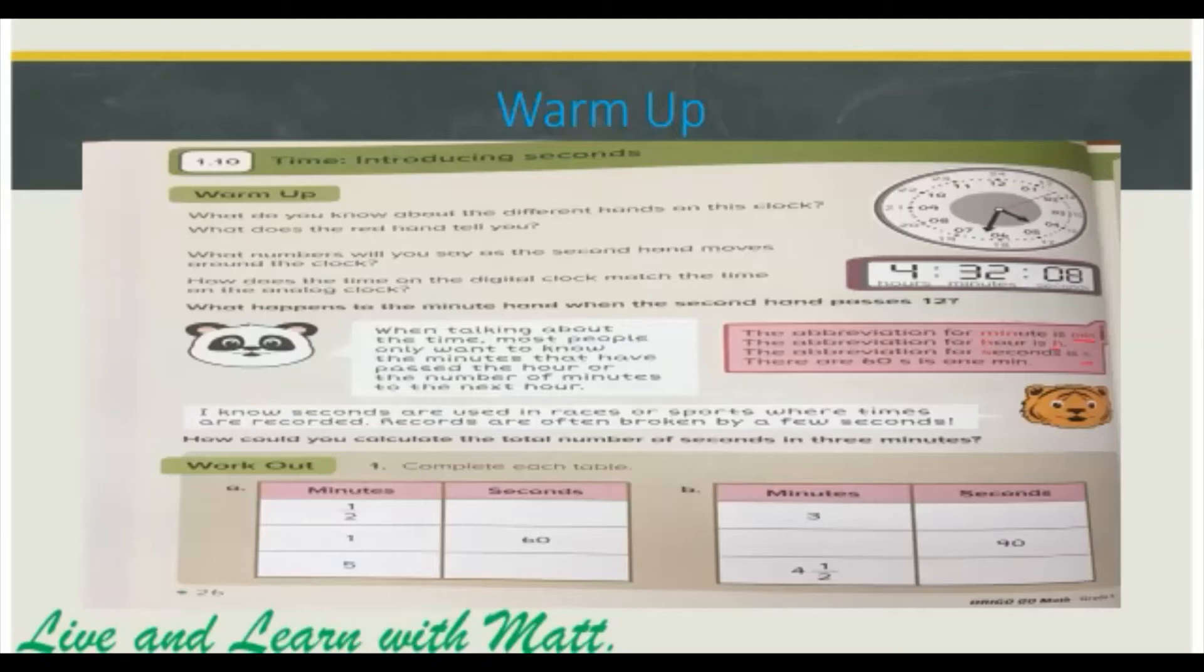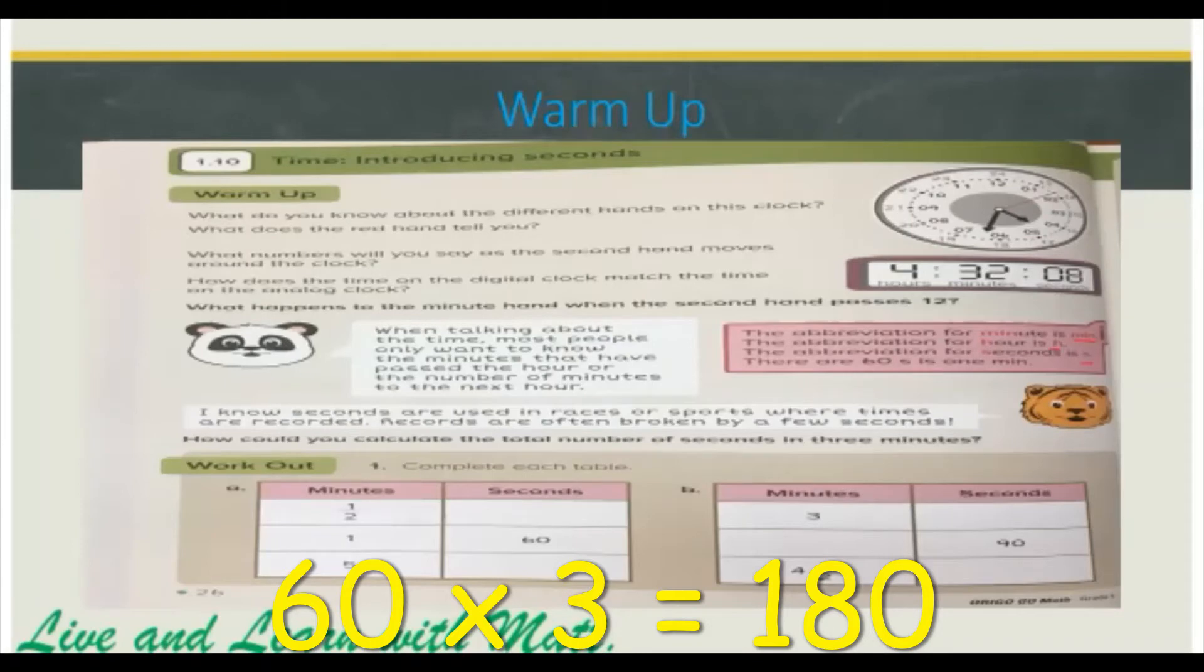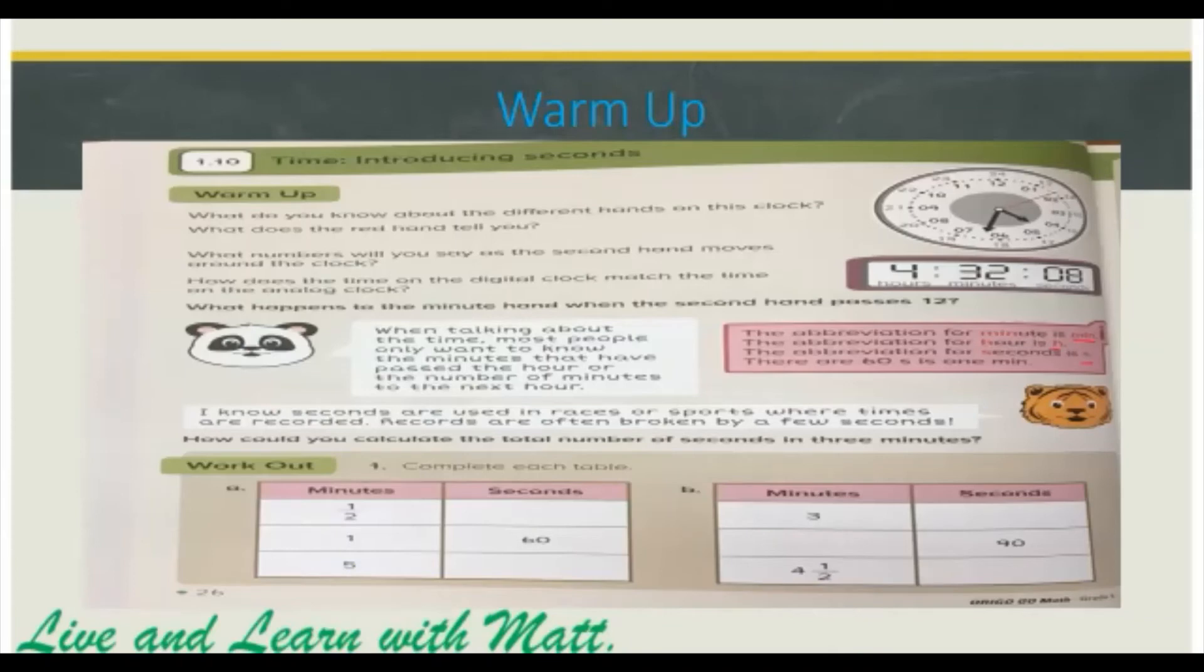So how could you calculate the total number of seconds in three minutes? The total number of seconds in three minutes would be 60 times 3, so there are 180 seconds in three minutes.